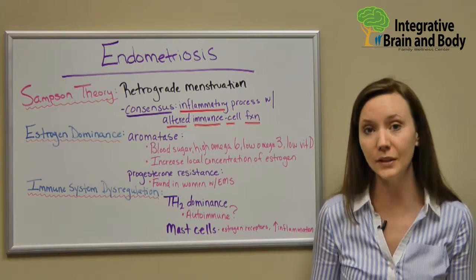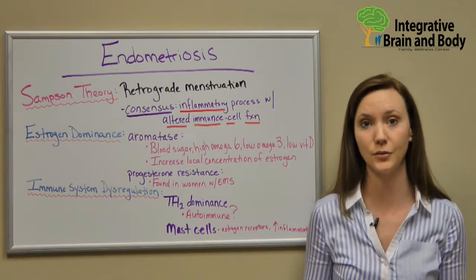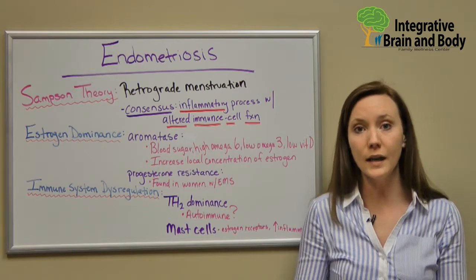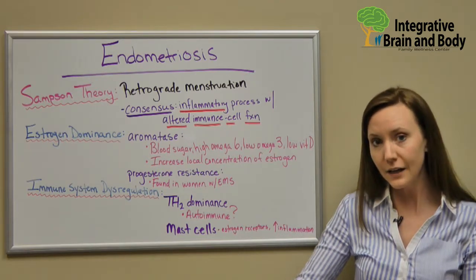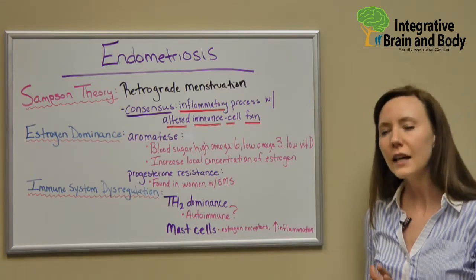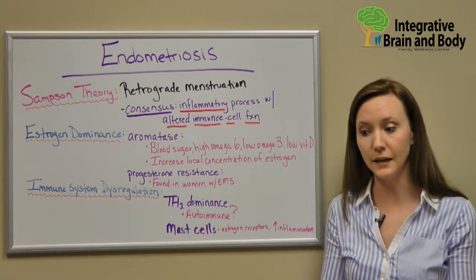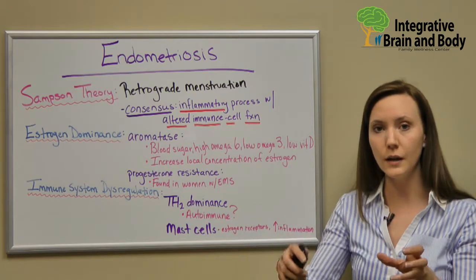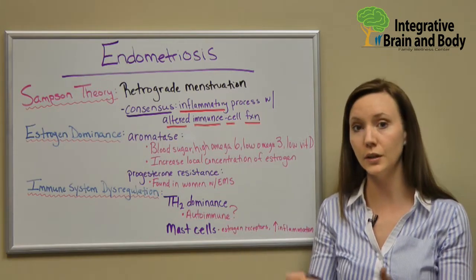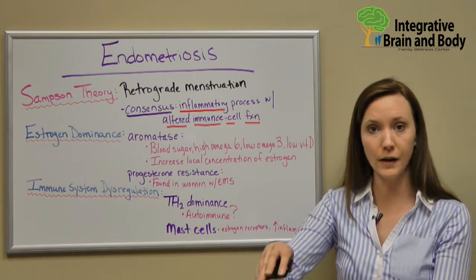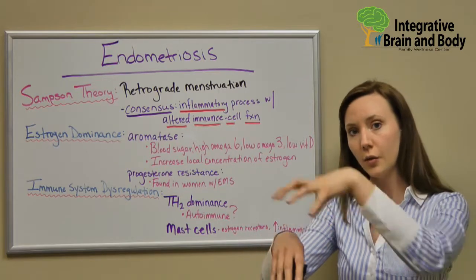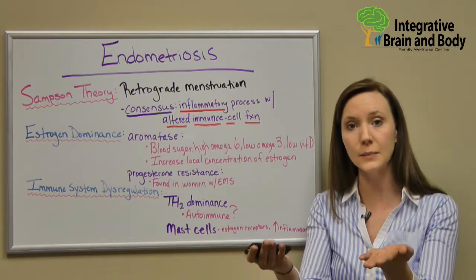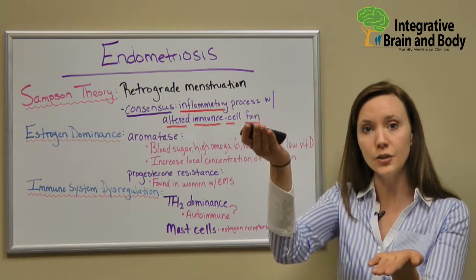What I found extremely interesting in the research is the immune system dysregulation associated with endometriosis — they're actually wondering if this might be considered an autoimmune disease. A lot of women with endometriosis show a Th2 dominant immune system. To give a simplified idea: we have Th1 and Th2. Th1 is the known attacker; Th2 is what we call the flagging system — it produces immunoglobulins and antibodies, tagging foreign invaders for Th1 to recognize and attack. What we're seeing in research is an imbalance between Th1 and Th2, with more of a Th2 response.